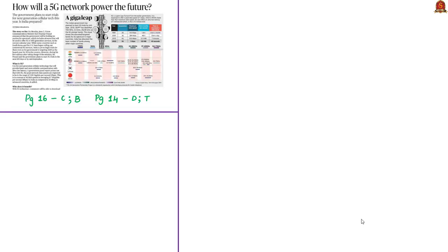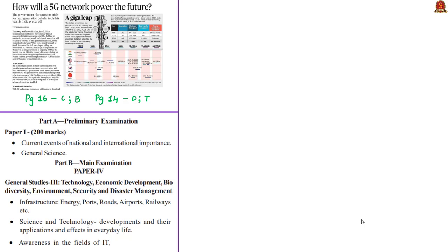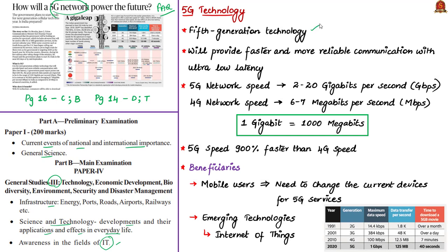The next news article is about 5G network. The analysis will be helpful in prelims preparation under current events of national and international importance and under general science. It is also relevant for mains preparation in General Studies Paper 3 under infrastructure, science and technology, and awareness in the field of information technology. 5G or fifth generation technology is the next generation cellular technology providing faster and more reliable communication with ultra-low latency. A government panel report states that with 5G, peak network data speeds are expected to be in the range of 2 to 20 gigabits per second.